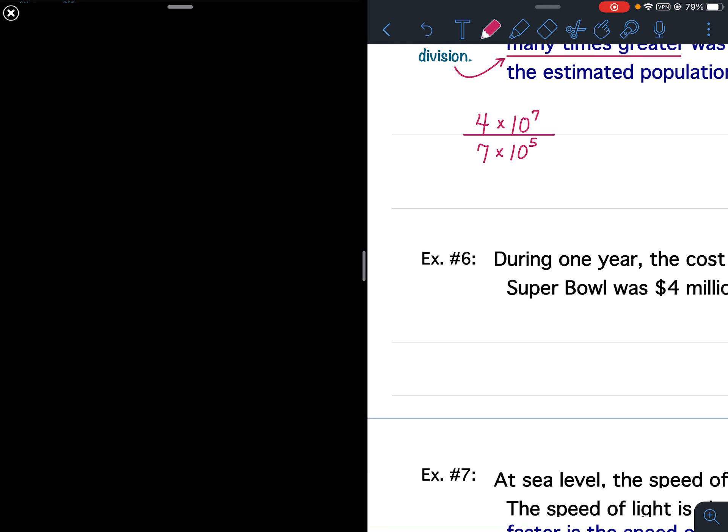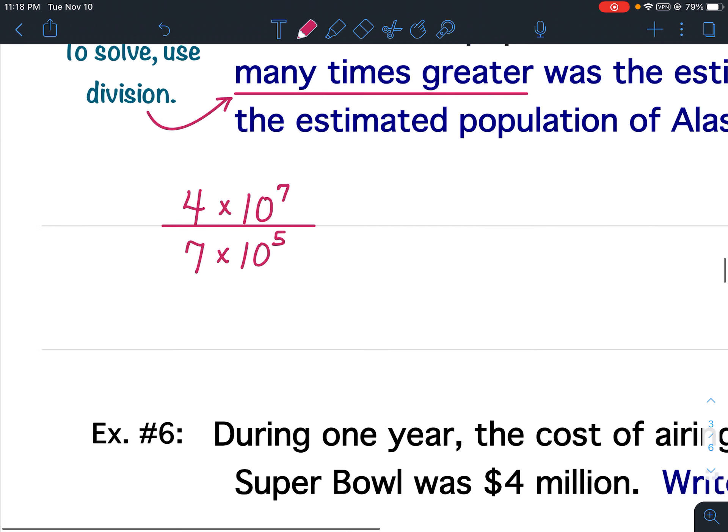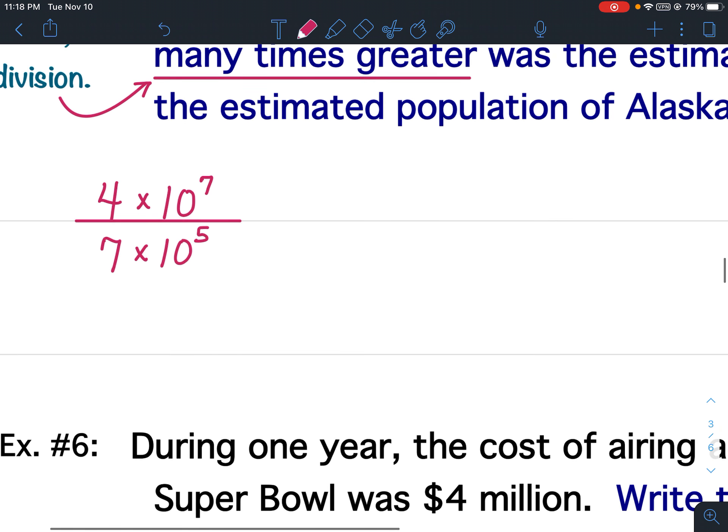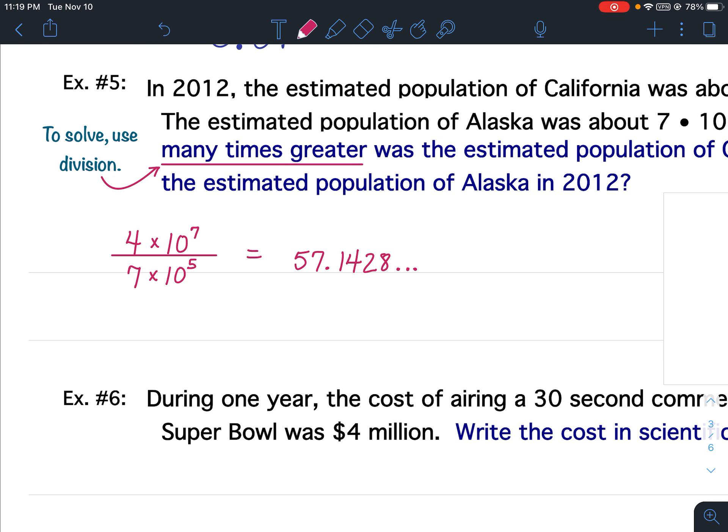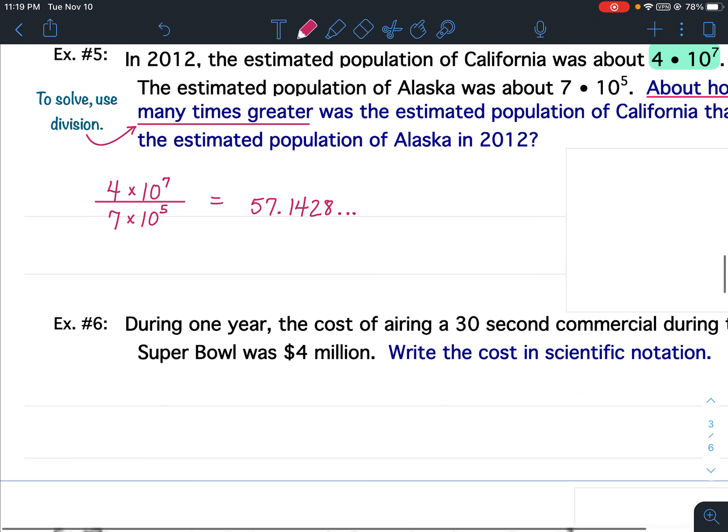And you get this decimal number. So, sorry, that was about to show a commercial. So, instead I'll just tell you what it is. So, the decimal number we get is 57.1428. And then it keeps going. So, 57.1428.